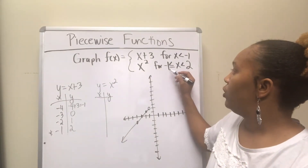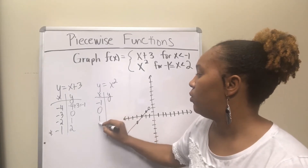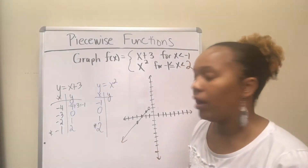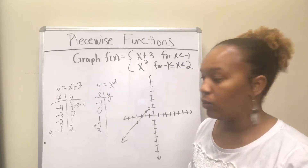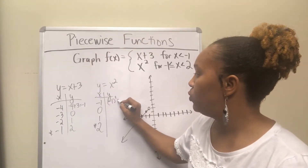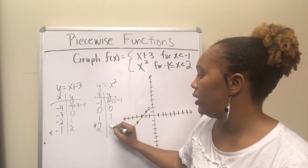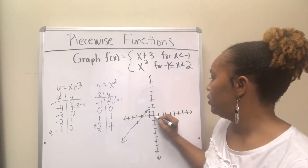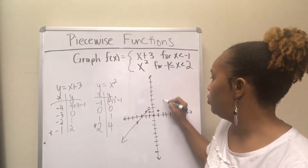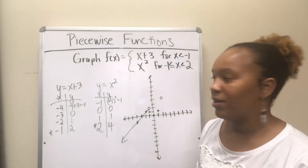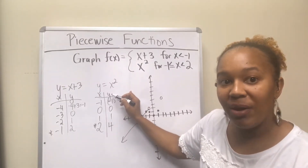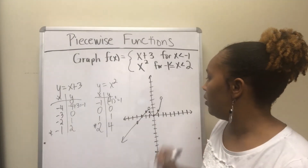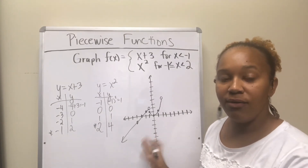For y equal to x squared, use x values between negative 1 and 2: so negative 1, 0, 1, and 2. Negative 1 is included so it gets a closed circle, but 2 is not included so it gets an open circle. Calculating: (-1)² = 1, 0² = 0, 1² = 1, 2² = 4. Plot those points. This is the squaring parent function, so it makes a parabola. The parabola starts at the closed circle (-1, 1) and ends at the open circle (2, 4).